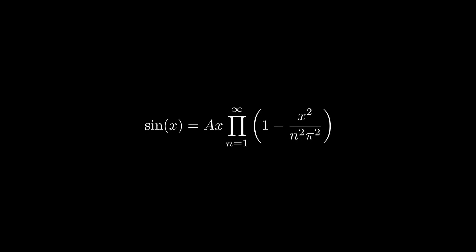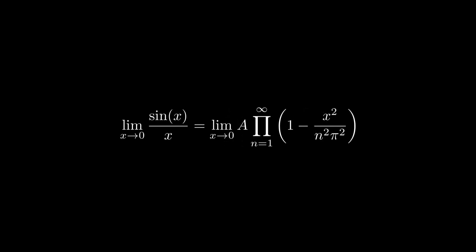Let's rearrange the equation by dividing both sides by x. Now, we will take the limit as x approaches 0 on both sides of the equation. This is a powerful technique in calculus. On the left side, we have a fundamental limit from calculus: limit as x approaches 0 of sine of x over x. This limit is known to be equal to 1.